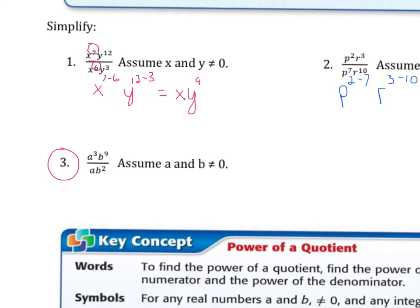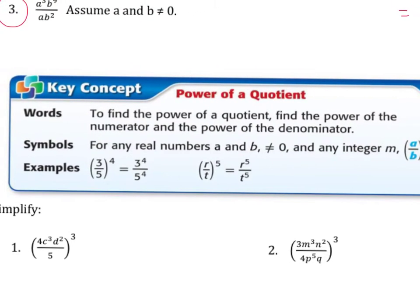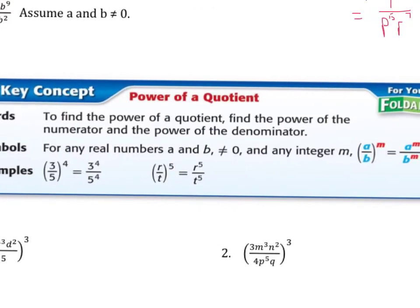Let's take a look at our next key concept: the power of a quotient. In our example, we have the quotient of a divided by b, but all of it is to the m power. They took the m and put it on the a, and put it on the b as well. So the final result is a to the m power over b to the m power. And in the example shown, they took the four and put it on the three, and on the five, to get three to the fourth over five to the fourth.